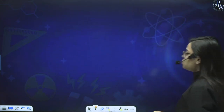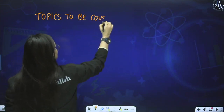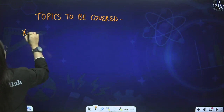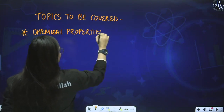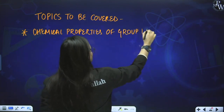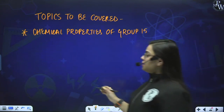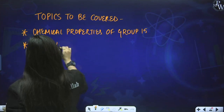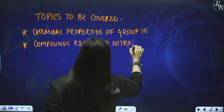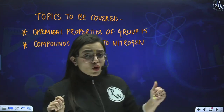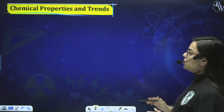Let us see what topics we are going to cover in today's lecture. First, we will complete the chemical properties of group 15 that were left over — reactivity towards hydrogen, oxygen, and metals. Then we will proceed to the compounds related to nitrogen: Dinitrogen, Ammonia, and Nitric Oxide — covering preparation, physical properties, and chemical properties.